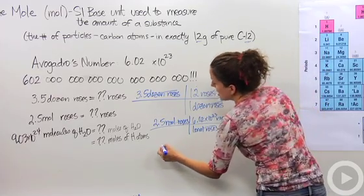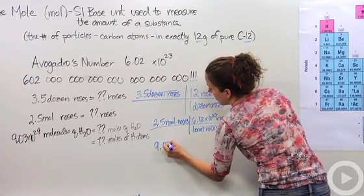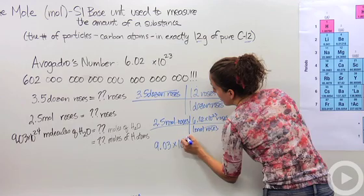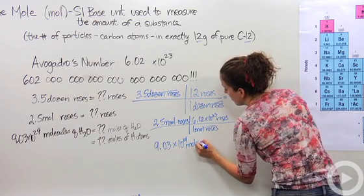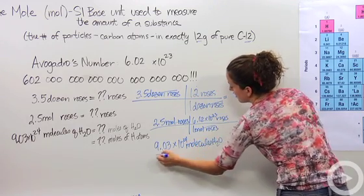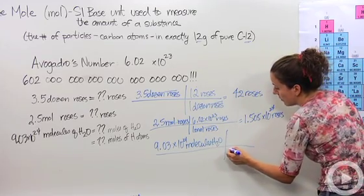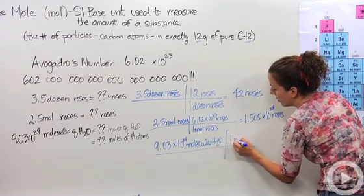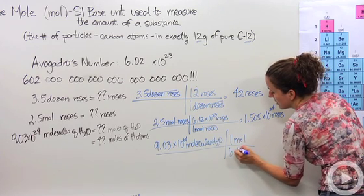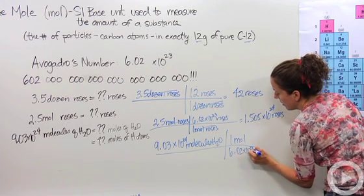Well, it's kind of the same thing. So we're going to say 9.03 times 10 to the 24th molecules of water. We know that we have 1 mole of water is 6.02 times 10 to the 23rd molecules.